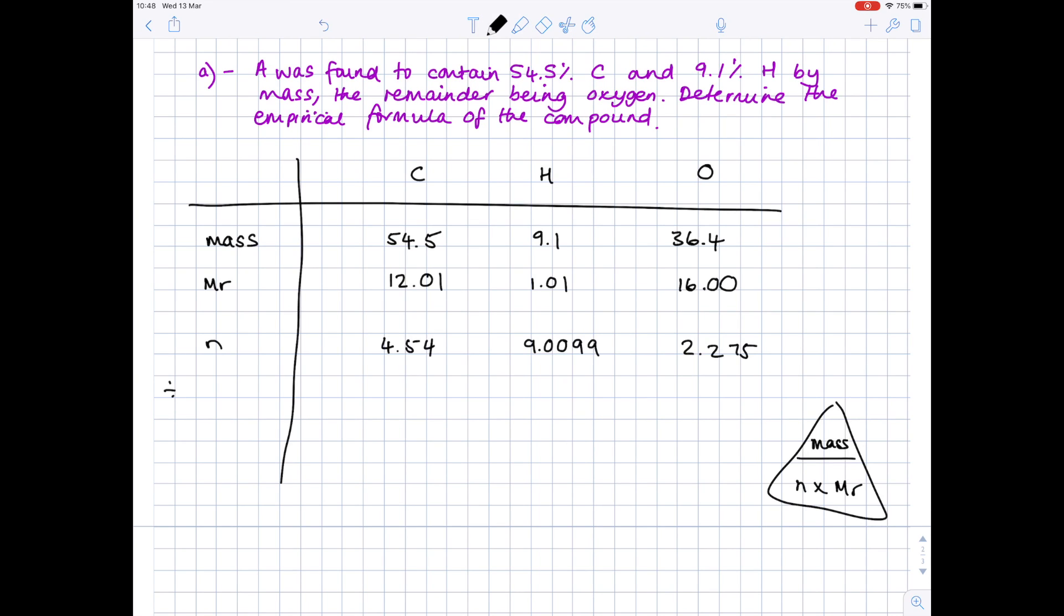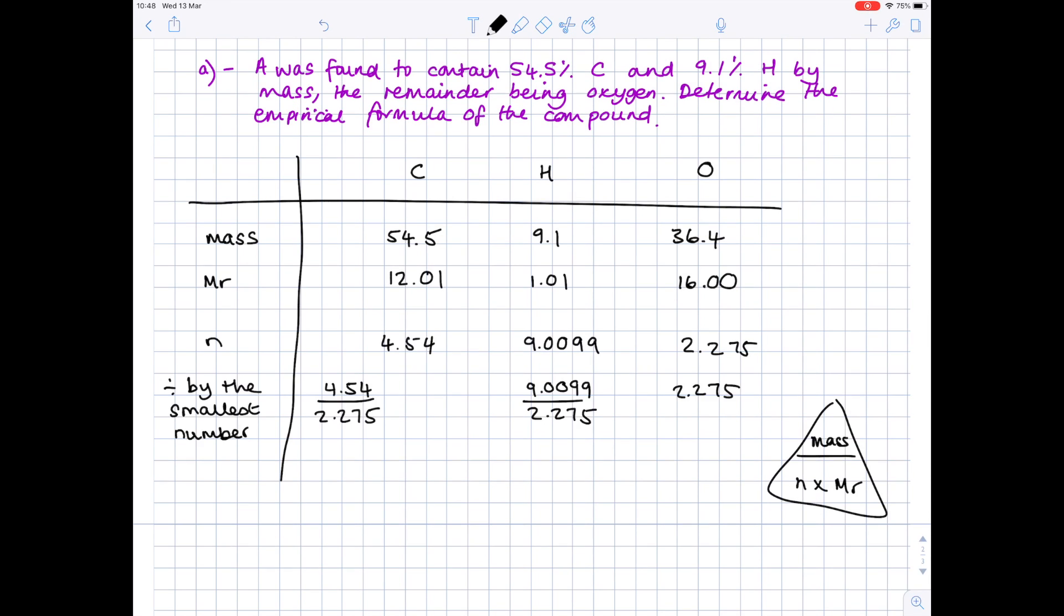And then we need a ratio here. So look at these three numbers, decide which is the smallest number, and then divide every single number by that number. So 4.54 divided by 2.275 equals 1.99. 9.0099 divided by 2.275 equals 3.96. And obviously 2.275 divided by itself is 1. Now we need to round these numbers because we need whole number ratios. So that becomes 2, this becomes 4, this is still 1. Here's your ratio.